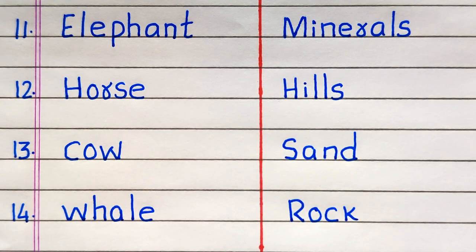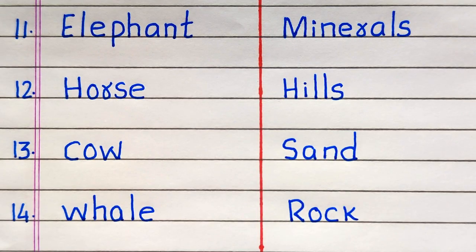11th example of an abiotic factor is Minerals, 12th Hills, 13th Sand, 14th Rock.